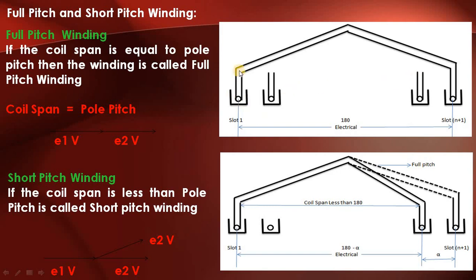Here slot number 1 is connected to slot number 1 plus τ (tau), and this angle will be 180 degrees. So this is full pitch winding. The coil span in full pitch equals the full pitch, and for short pitch the coil span is less than full pitch.